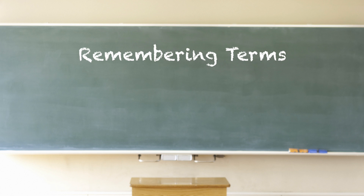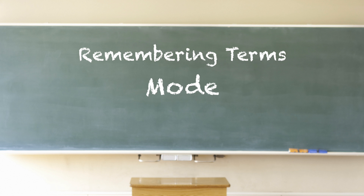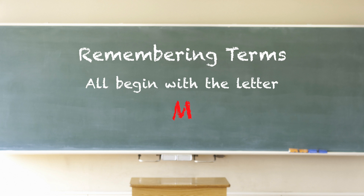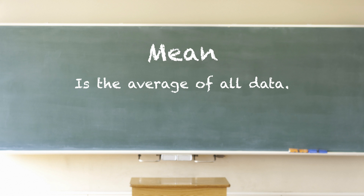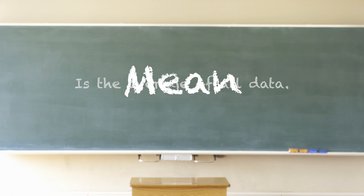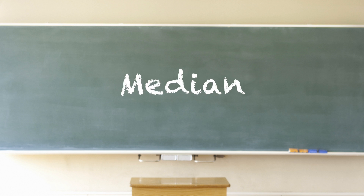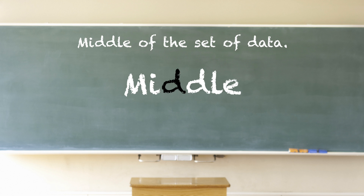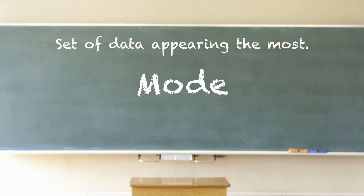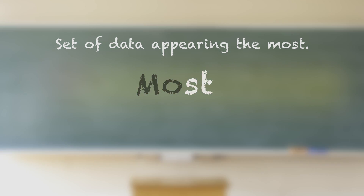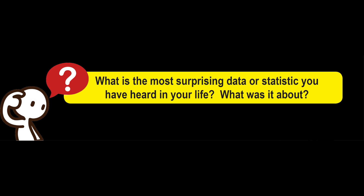Here's how to remember the statistical terms mean, median, and mode — they all begin with the letter M. Mean is the average and takes the longest to solve, which might make you mean. The median has the letter D, just like the word middle. And mode begins with MO, just like the word most. What is the most surprising data or statistic you have heard in your life?